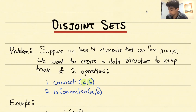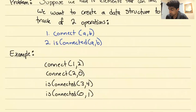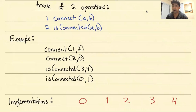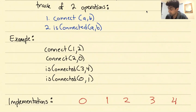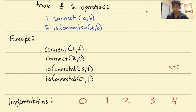Let's walk through a couple of examples. Suppose we have five people. Whenever we work with disjoint sets, we store these people as numbers from 0 to n minus 1. So if n equals 5, we have people 0, 1, 2, 3, and 4 — these are the elements we'll call connect and isConnected on.